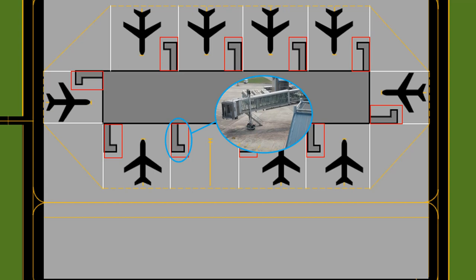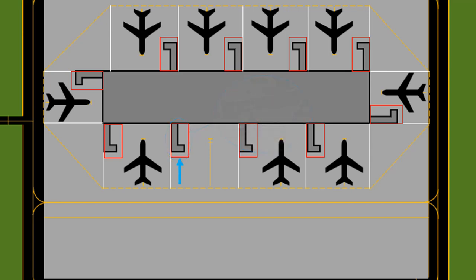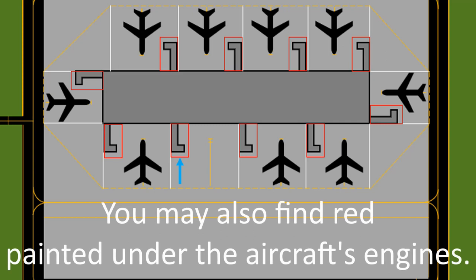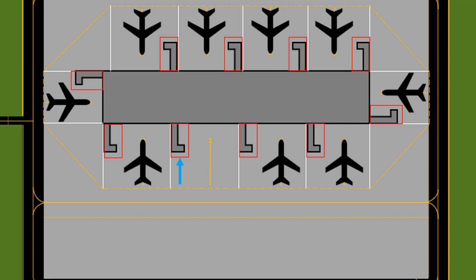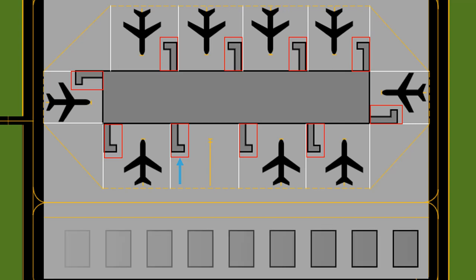The gate has a jet bridge — not the gate itself, the jet bridge — which can extend in and out to reach the aircraft when parked, so passengers can walk from the aircraft to the terminal or vice versa. Any red area at a stand or gate is an area where you're not supposed to walk or drive, because it's where the jet bridge needs to maneuver.